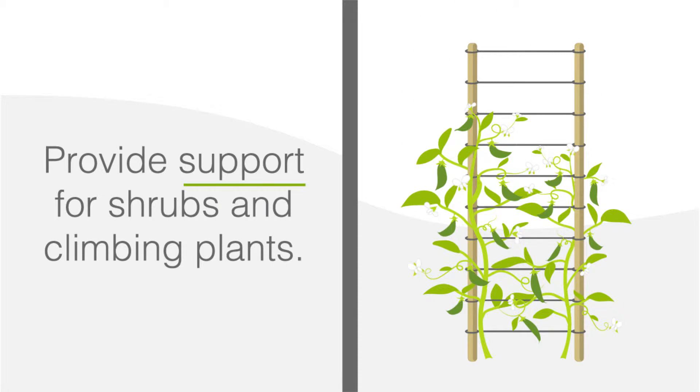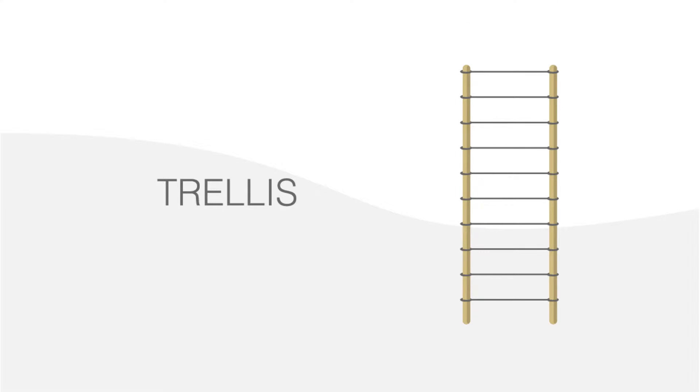Trellising with Real Gardening. Trellising is a way to provide support for shrubs and climbing plants with the help of a small structure. This structure is called a trellis.